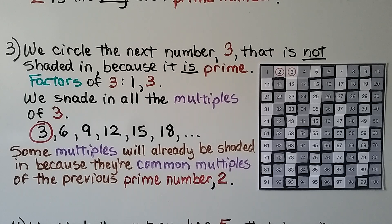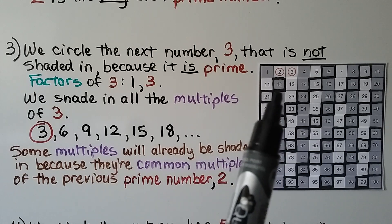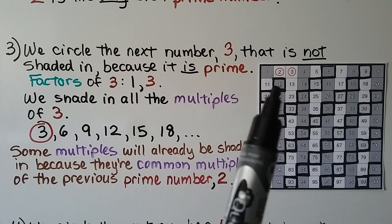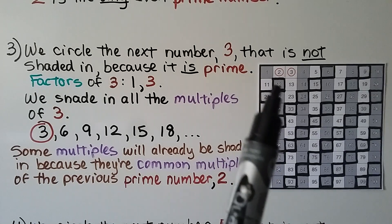Some multiples will already be shaded in because they're common multiples of the previous prime number 2. For example, 12 is a multiple of 3, but it will already be shaded in as one of the multiples of 2.